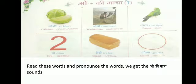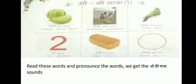See the first picture — Gobi. Gobi means cabbage, Muttakos. See the next picture — Dobi, the washerman. Dota — parrot. Pronounce every word: Go-bi-go, Do-bi-do, Dota-do. For the first letter you get the O sound.